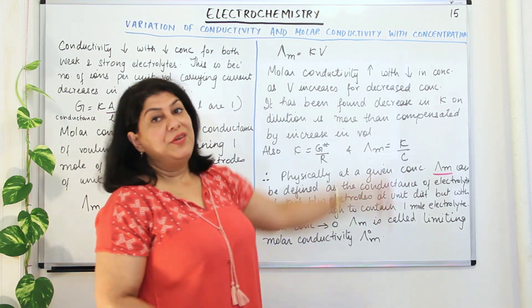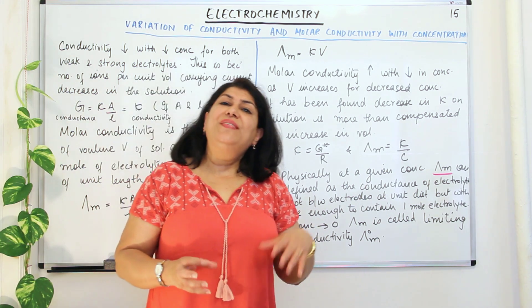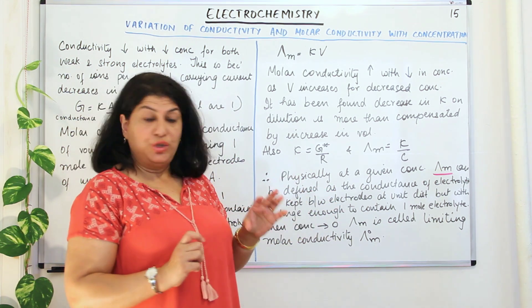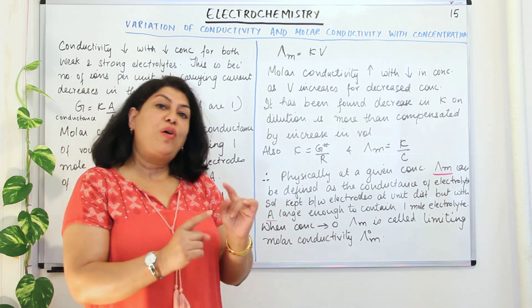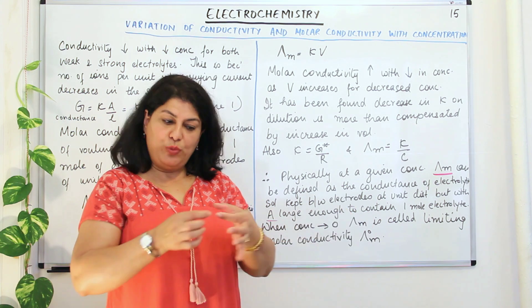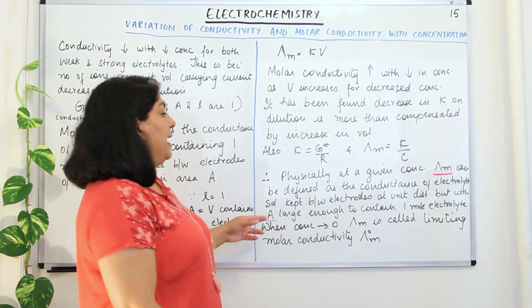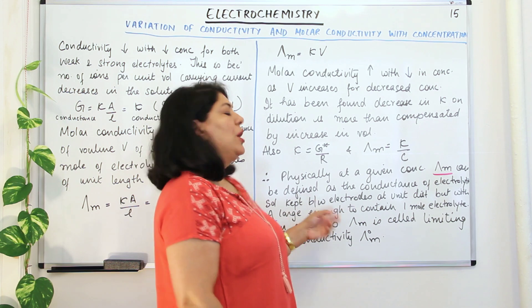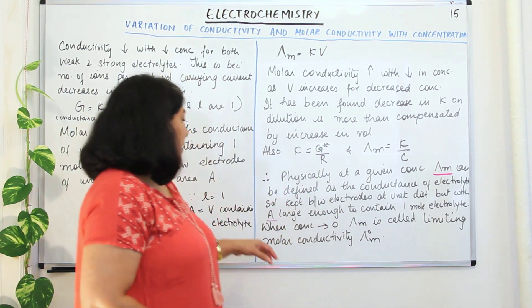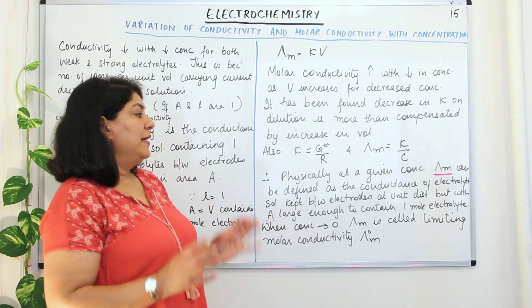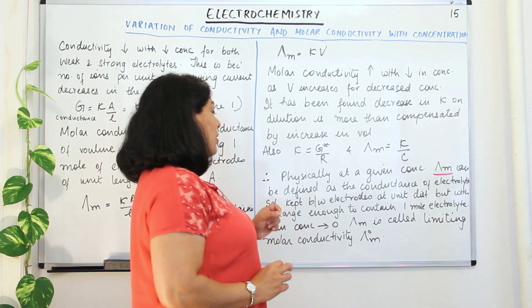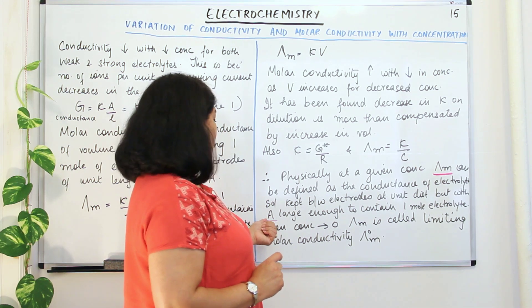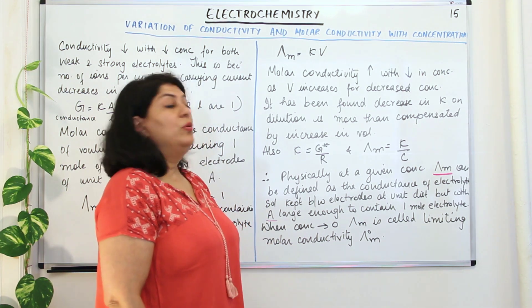We can now physically define molar conductivity. At any concentration, the molar conductivity of a solution is defined as the conductance of that electrolytic solution kept between electrodes that are unit length apart, but with an area of cross-section A large enough to contain one mole of the electrolyte.